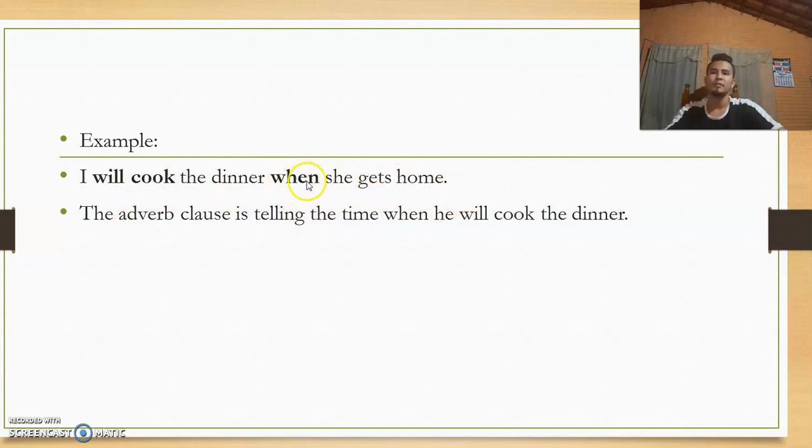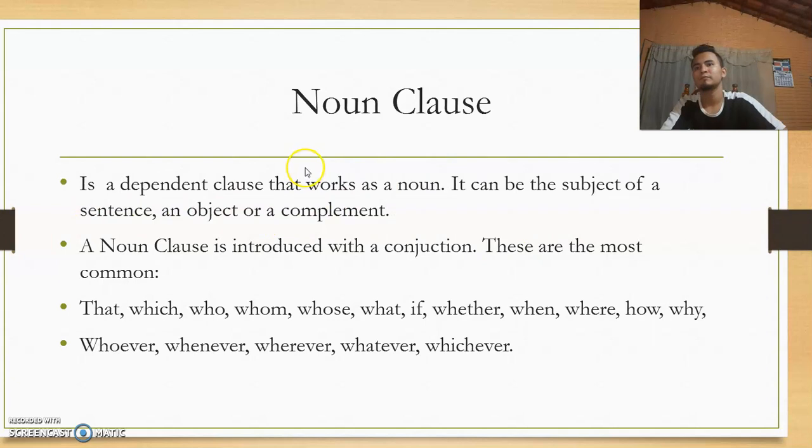Here this is an adverb clause that is modifying when the verb will cook, because it's telling you when this action will take place. When will it happen? It will happen when she gets home, so the word is telling the time when he will cook the dinner.